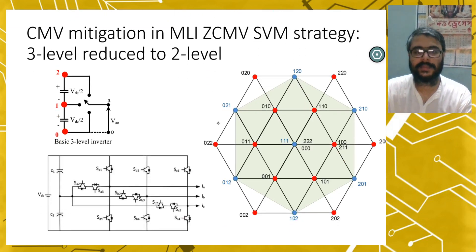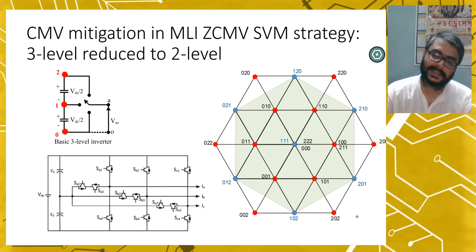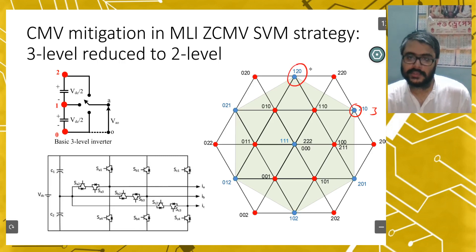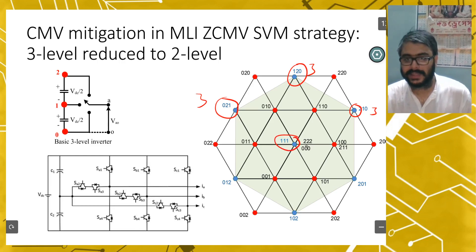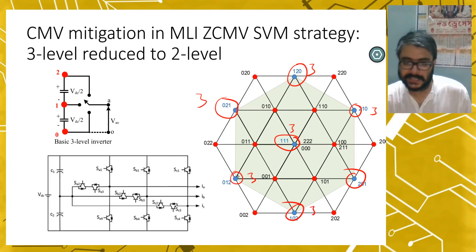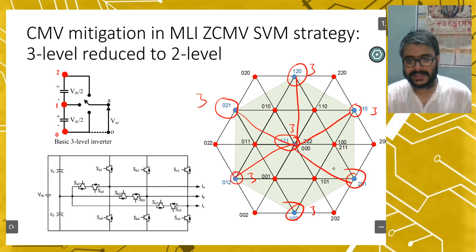For CMV mitigation using a multi-level inverter, there are certain vectors where CMV will be constant. If you see the space vector hexagon, vectors like 2,1,0; 1,0,1; 0,1,2; and 1,1,1 all have a CMV index of 3. If you only use these vectors, your CMV will be absolutely constant without using any extra leg.